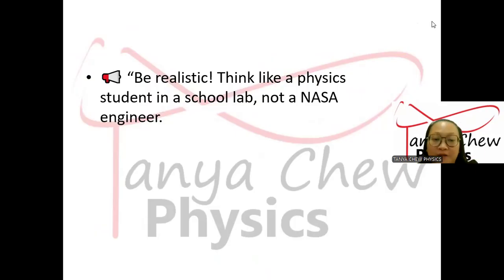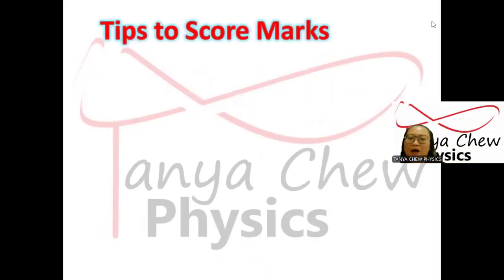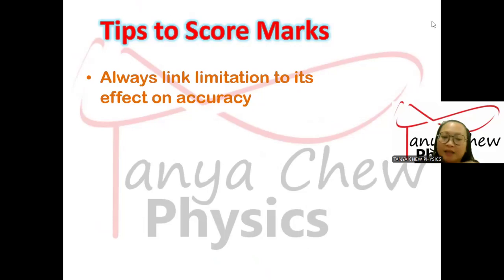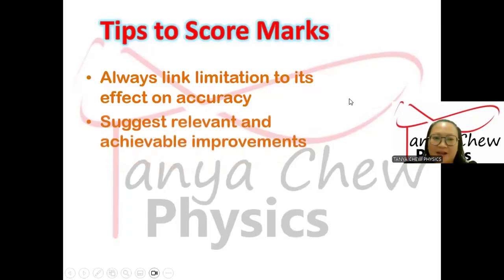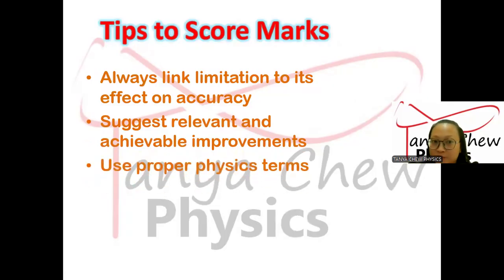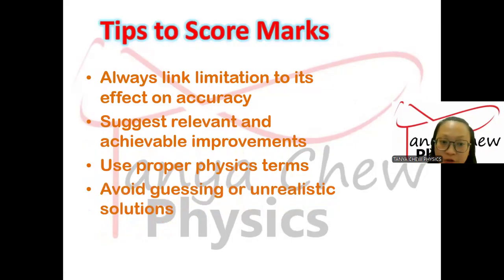Be realistic — think like a physics student in a school lab, not a NASA engineer. Tips to score marks: always link your limitation to its effect on accuracy, always suggest a relevant and achievable improvement, use proper physics terms like 'reaction time' or 'parallax error,' and avoid guessing or unrealistic solutions.